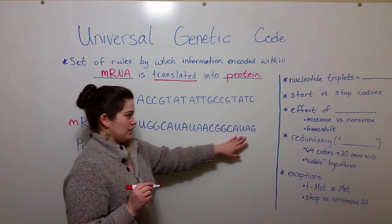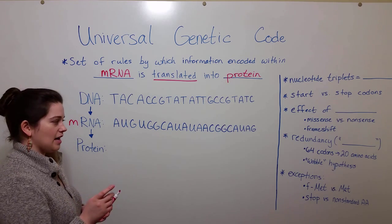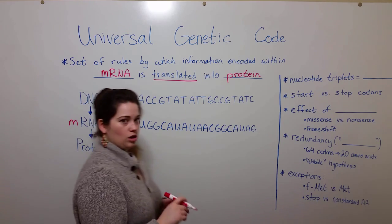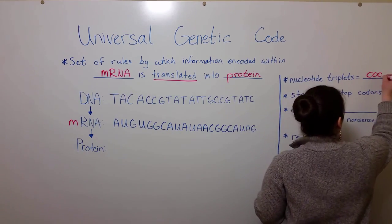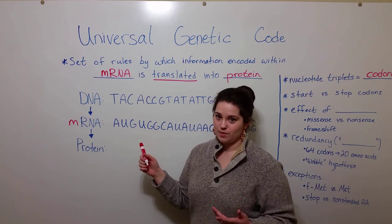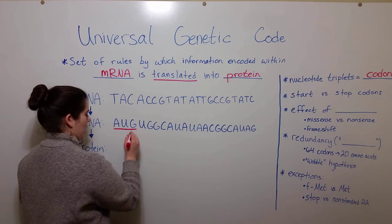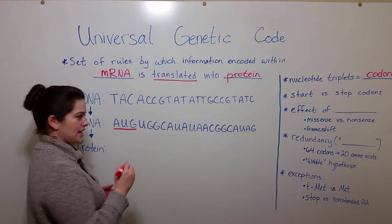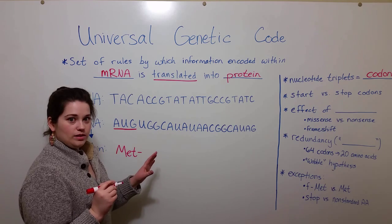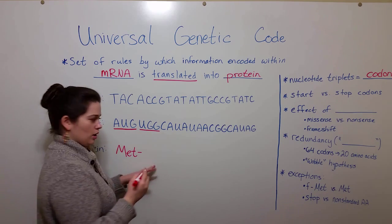Here we have our mRNA strand. The genetic code works off of nucleotide triplets, meaning a set of three nucleotides called a codon. Each codon codes for an amino acid. For example, AUG is one codon, and it codes for the amino acid methionine. Continuing down the line to the next codon, UGG codes for tryptophan.